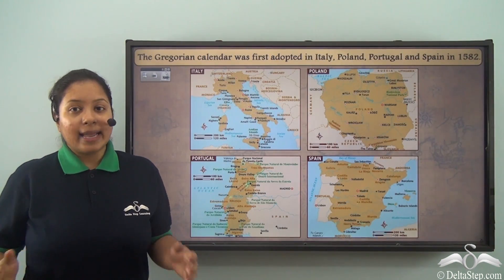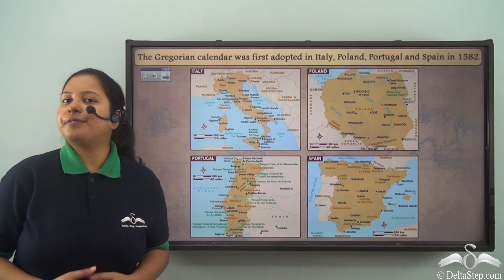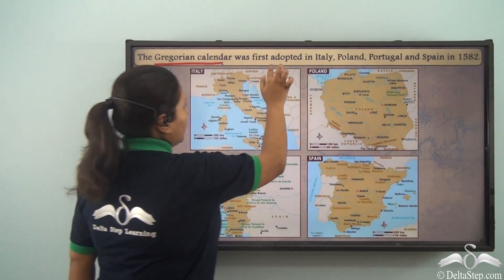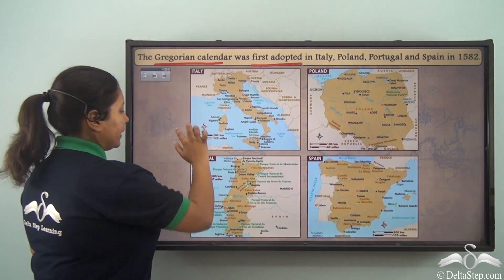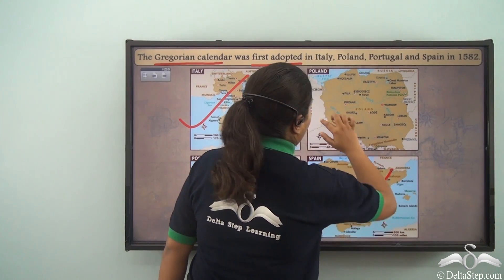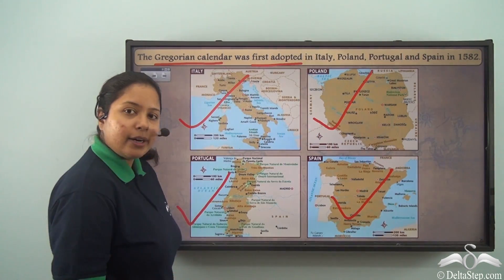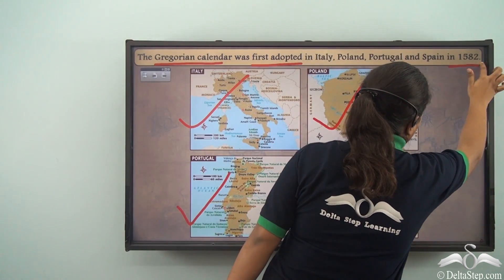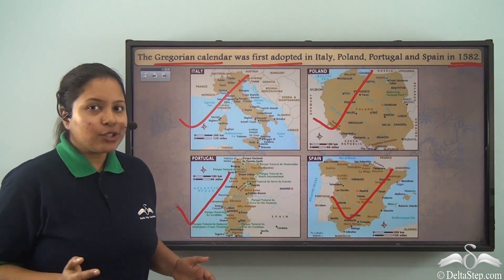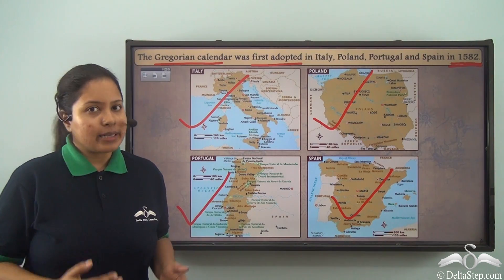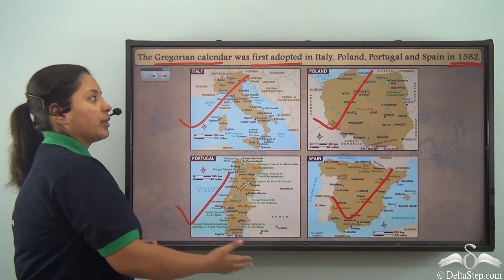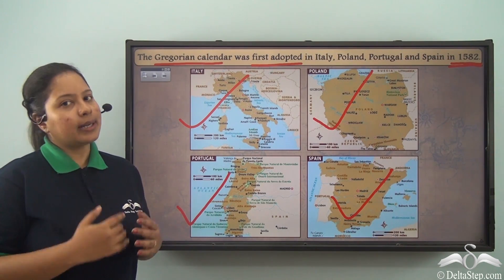Now let's find out where it was first adopted. The Gregorian calendar was first adopted in Italy, Portugal, Spain and Poland in the year 1582. This was the year from which the Gregorian calendar had started being used by the people, and these four countries were the first to adopt it.